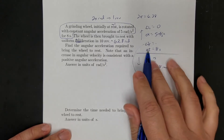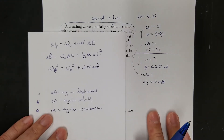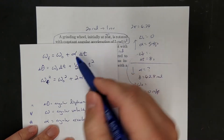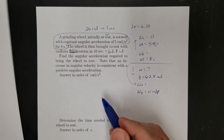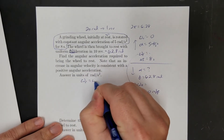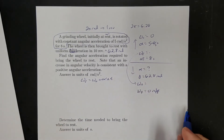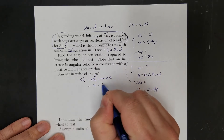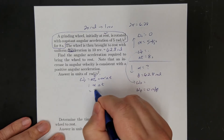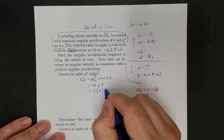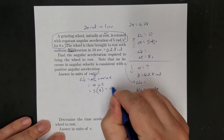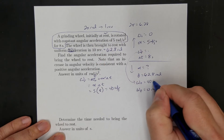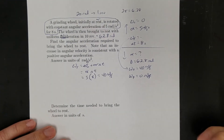For the speed-up phase, I don't know theta, so I use the first equation: final equals initial plus alpha times delta T. The initial is 0, so the final is just alpha times time — 5 times 8 seconds equals 40 radians per second. That's my final speed for the speed-up part, which also becomes my initial speed for the slow-down part.